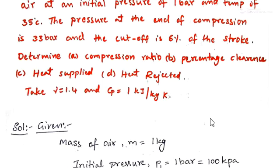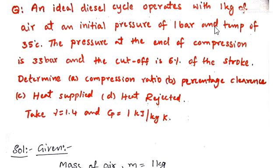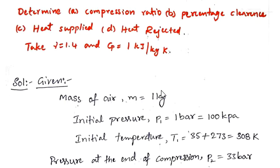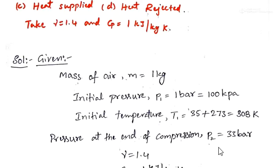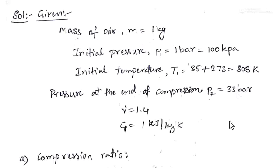Given data: mass of air is 1 kg. Initial pressure P1 = 1 bar, that is 100 kPa. Initial temperature T1 = 35 degrees centigrade, which converts to 308 Kelvin. Pressure at the end of compression P2 = 33 bar. Gamma = 1.4 and Cp = 1 kJ per kg Kelvin.